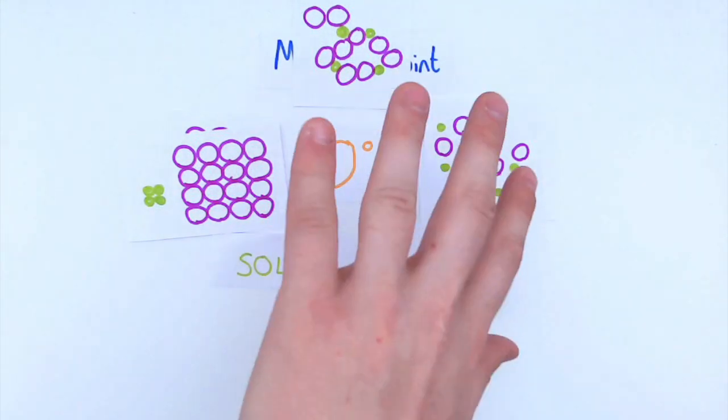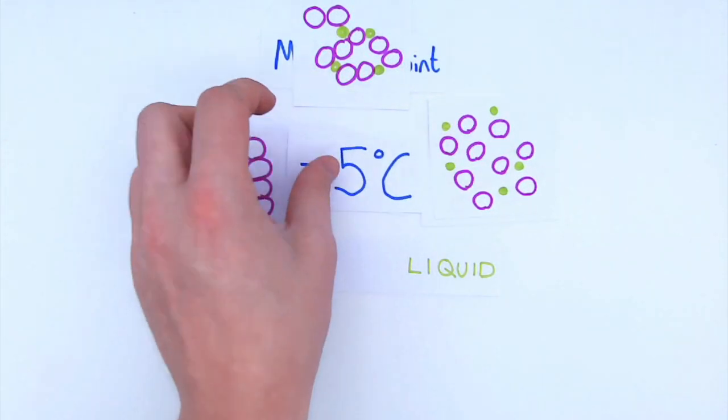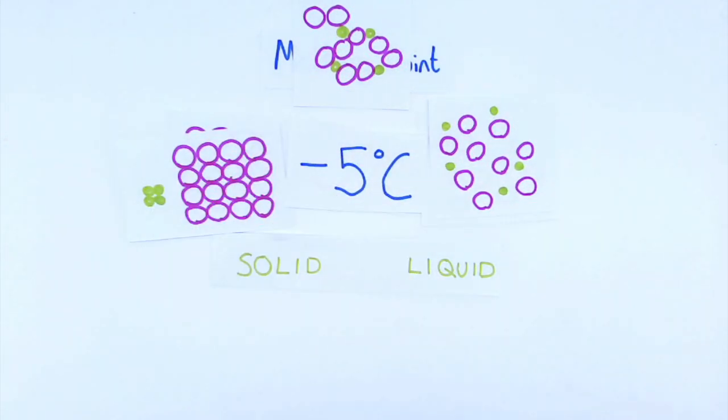That's a harder process for that to happen. So that means that the melting point of salt water is actually minus five degrees. We use this because in on a cold winter, we grit the roads and that prevents the water and the moisture on the roads overnight freezing and turning into ice because it needs to reach that lower temperature.